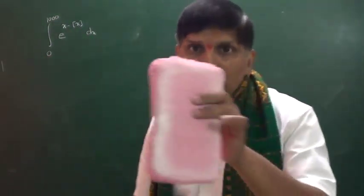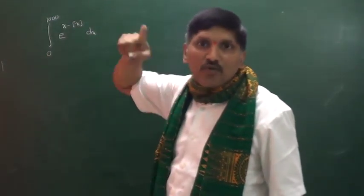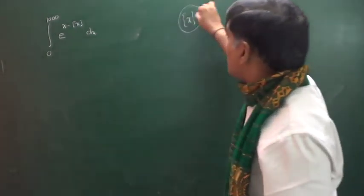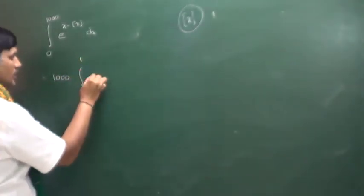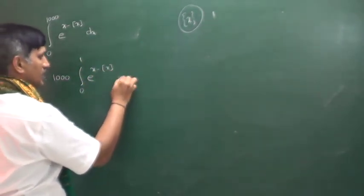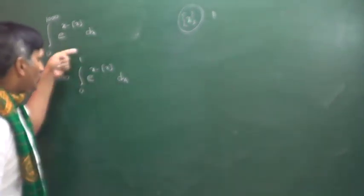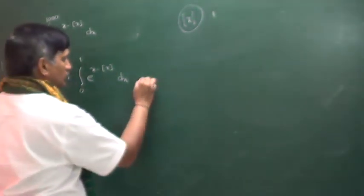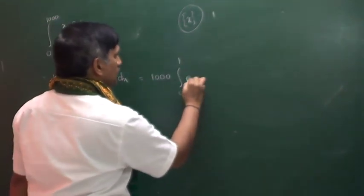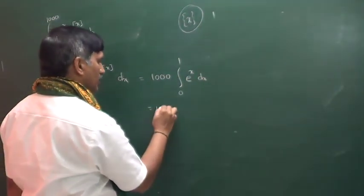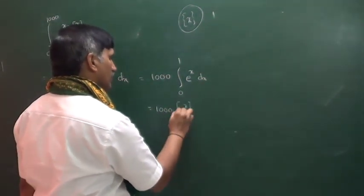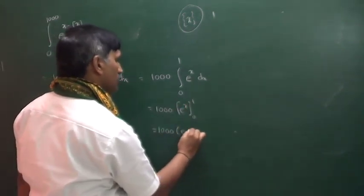Second question: integral from 0 to 1000 of e^(x−[x]) dx. Now x minus the integral part of x is the fractional part of x, which is a periodic function with period 1. Using the first property, this equals 1000 times the integral from 0 to 1 of e^(x−[x])dx. Between 0 and 1, the integral part [x] = 0, so this becomes 1000 times the integral from 0 to 1 of eˣ dx = 1000·[eˣ]₀¹ = 1000(e−1).